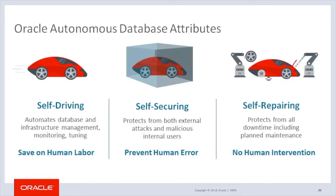The vision of the Autonomous Database is to provide a service that is self-driving, which will automatically take care of all database and infrastructure management, as well as monitoring and tuning, so the user will simply specify the service level agreement and Oracle will make it happen. We believe this will help reduce costs and improve productivity by automating the mundane tasks of provisioning, patching, and backing up databases, freeing up IT teams to focus on tasks that bring value to the business. We also want the database to be self-securing, protecting itself from both external and internal malicious attacks, by automating encryption of all data whether at rest or in flight, and automatically applying security updates with no downtime. Finally, we want the Autonomous Database to be self-repairing — it will automatically recover from any failure and minimize all kinds of downtime including planned maintenance, with an SLA guarantee of 99.995% availability.